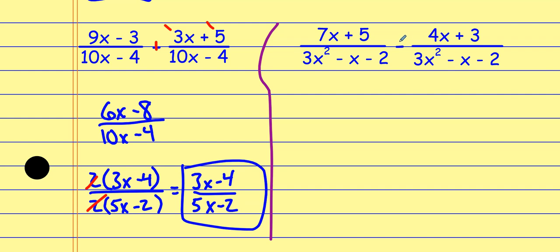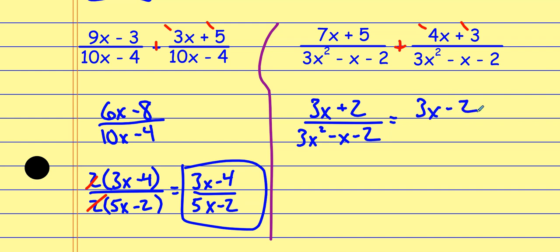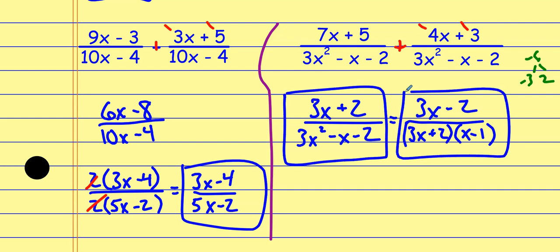This next one — same kind of thing. If you want to change subtraction to adding the opposite, change that to addition and then do the opposite of each term. The denominator is already the same, so now I subtract. That gives me 3x, 5, and a negative 3 becomes a plus 2. Then the denominator is 3x squared minus x minus 2. From here we want to reduce if we can — build a bridge in that denominator. Two numbers that multiply to negative 6 but add to negative 1 are negative 3 and positive 2. That factors into 3x plus 2 and x minus 1. Nothing cancels out, so we could have left it as is — that's an acceptable answer, or in factored form is okay as well.